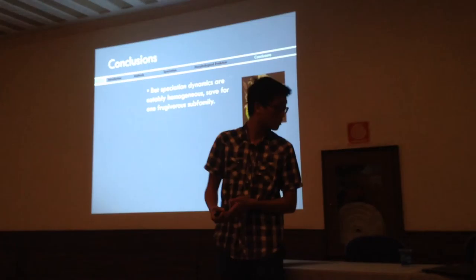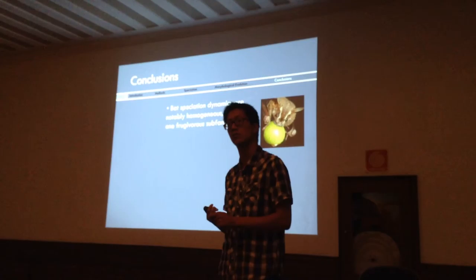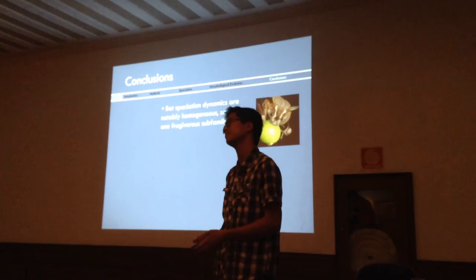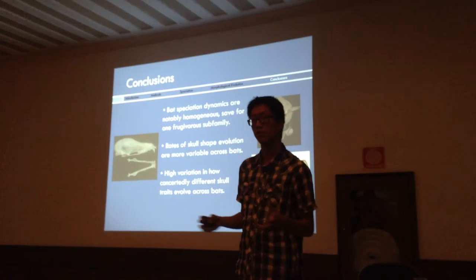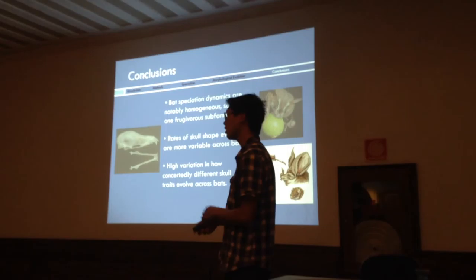So a quick summary of what I've talked about so far. The first conclusion is that bat speciation dynamics are notably homogeneous, save for one frugivore subfamily. This is not what a lot of biologists, including myself, especially bat biologists, expected. We kind of hoped and expected there would be a lot of heterogeneity because we know they're so imbalanced. But it looks like most bats are really doing the same thing, and we have to look for other explanations for why they're so phylogenetically imbalanced. For morphological data, compared to speciation, rates of skull-shaped evolution seem to be much more variable across bats. But there's a lot of variation in how concertedly, how unified, different skull traits evolve across different skulls when it comes to family-level evolution, or perhaps genus- and species-level evolution.